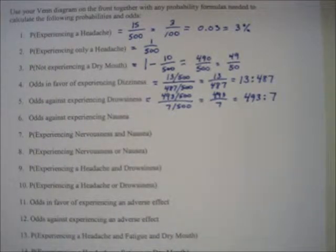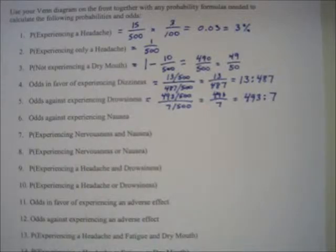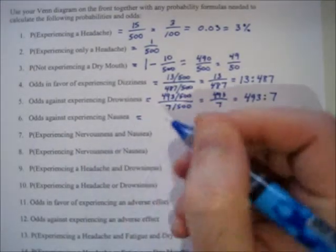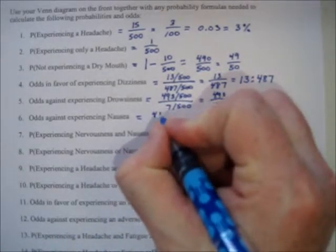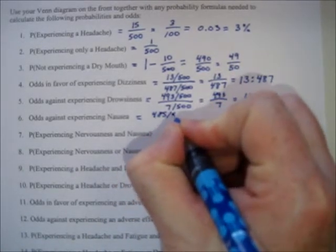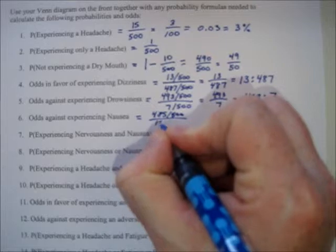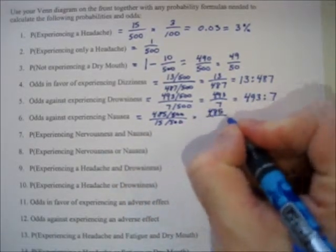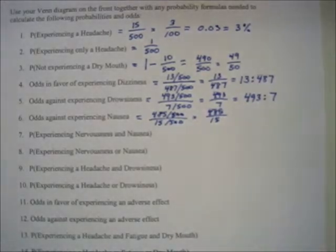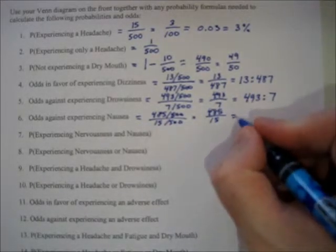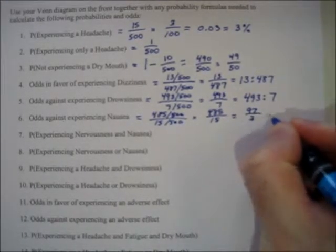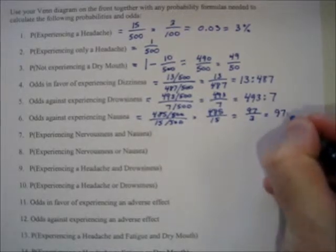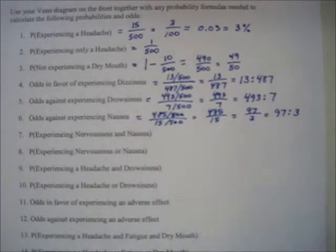Odds against experiencing nausea. Referring to your chart, there are 15 people who do experience nausea, which means 485 out of 500 don't and 15 out of 500 do. So 485 over 15 reduces to 97 over 3, which becomes the odds statement 97 to 3.